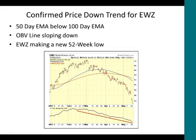The 50-day EMA crossed below the 100-day EMA, so it's in a price downtrend. The on-balance volume line is sloping down, which we like to see if we're going to be short a market, and it's making a new 52-week low. The Brazil index is obviously in a price downtrend — these are the type of markets we want to be short by selling call options against our super portfolio stocks.